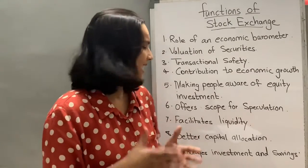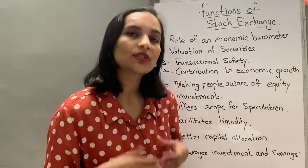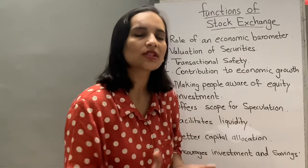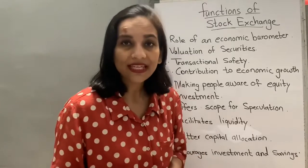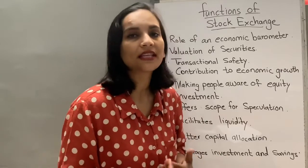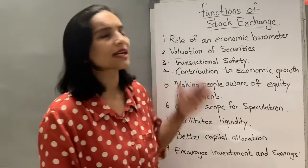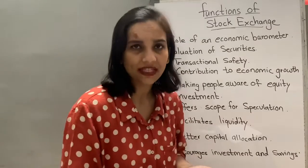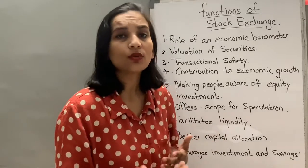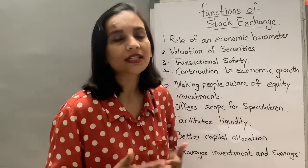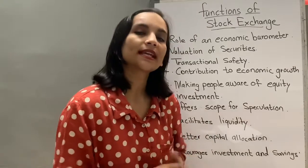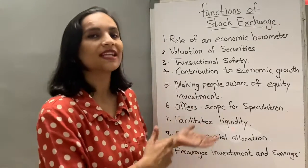Number eight: better capital allocation. Generally, the public is hesitant to put money in any company. They have a hesitation about whether the company is loss-making or not. But there is no need to worry, because the maximum companies in the stock exchange are profit-making companies and their securities are highly traded. So there is no need to hesitate while investing in the stock exchange. That is why it is known as better capital allocation.